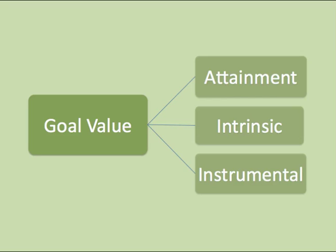The importance or value of a learning goal influences students' motivation. Researchers distinguish three different sources of value or satisfaction associated with learning goals. Attainment value is the satisfaction associated with attaining competence or mastery — the source of value is related to the sense of being good at something. Intrinsic value is satisfaction associated with learning in and of itself, independent of the outcome. And instrumental value refers to the importance of a learning goal as a means to accomplish another goal or receive external rewards such as praise, recognition, status, money, career options, and so forth.